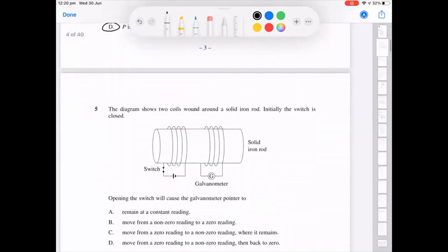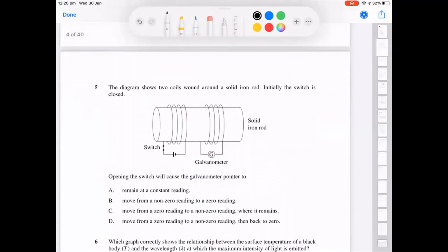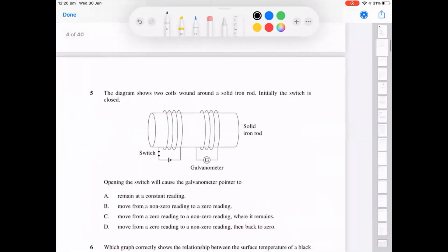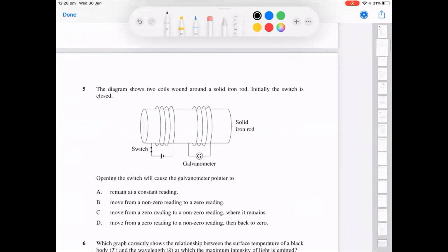Cool. Final question. Opening the switch for DC current will initially result in a change in flux. This will mean we see our galvanometer moving from non-zero since it's DC current to zero. Therefore, we'd expect a deflection initially and back to zero since it's DC and not AC current.